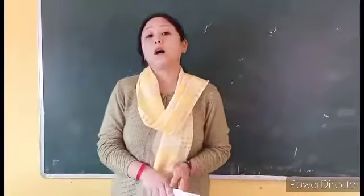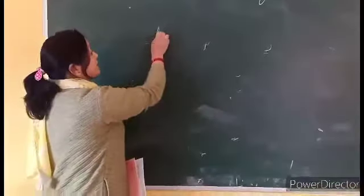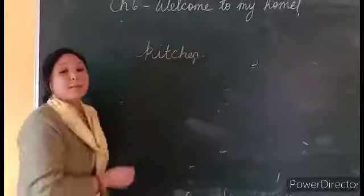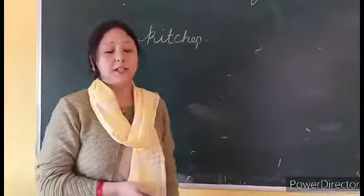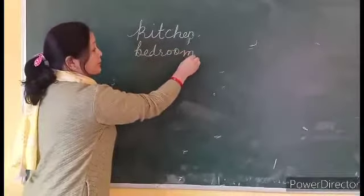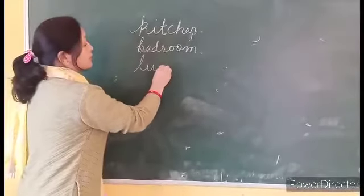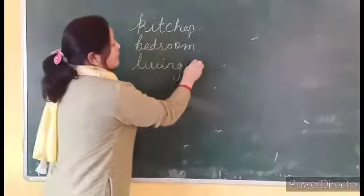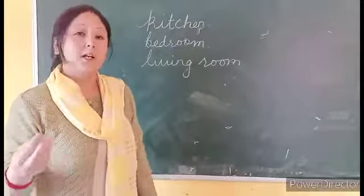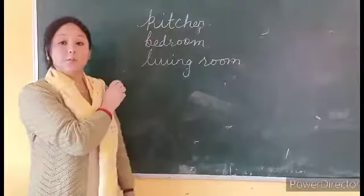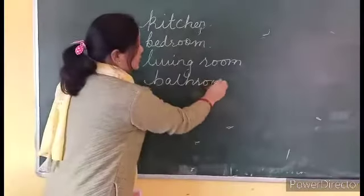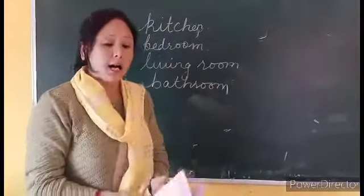A house has different rooms. There is a kitchen in your house — your mother cooks food in the kitchen. Then you have your bedroom where you sleep. Then the living room, where you talk, sit with your parents, watch TV and cartoons. Then you have your bathroom where you take a bath. So these are the different rooms in a house.